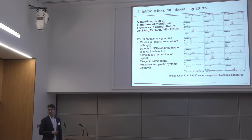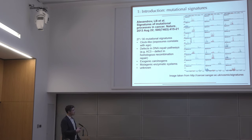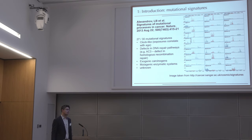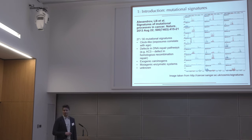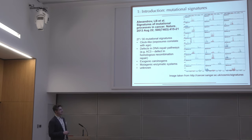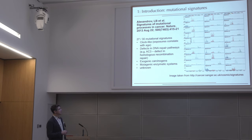About half of the signatures have an asserted mutational process underneath them, but the other half doesn't — that's a problem because we have these patterns but for half of them we cannot tell what they are. Still, those where we know what they stand for are really important. Notably, there's signature 3 — it's actually a signature with a very weak signal and no strong predominance — but it's very important because it is linked to defects in homologous recombination repair.